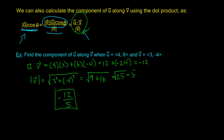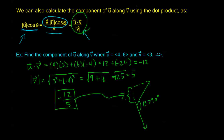In this example, u points up and v points down-right, so the angle theta is greater than 90 degrees. Whenever theta is greater than 90 degrees, the component of u along v is negative. The magnitude of that component is 12 fifths, meaning as I travel along u I travel 12 over 5 units along v, but in the opposite direction of where v is pointing.